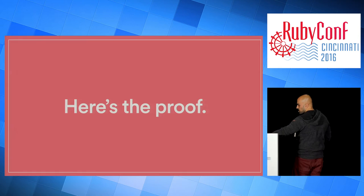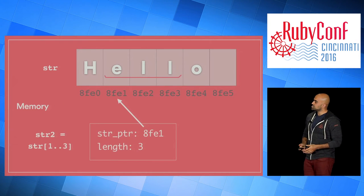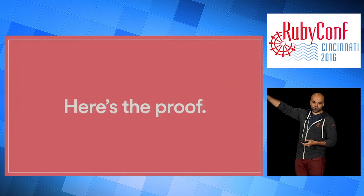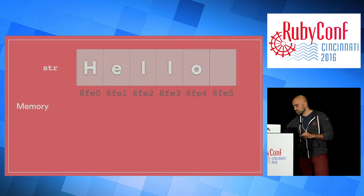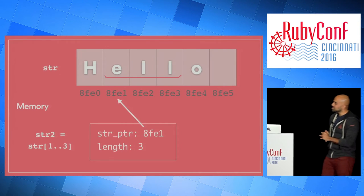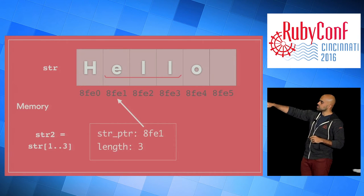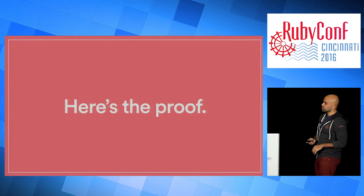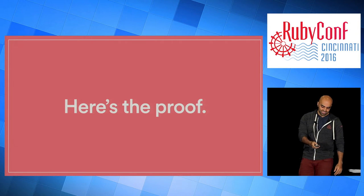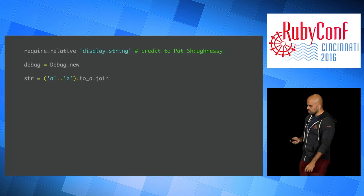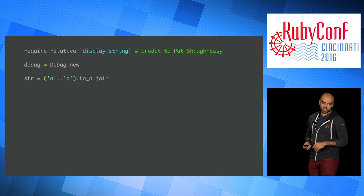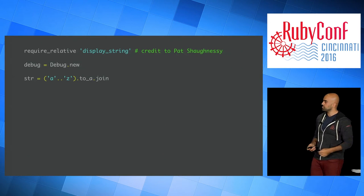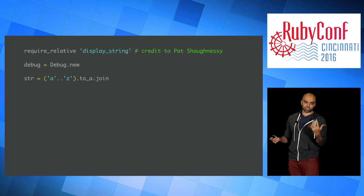Let me show you proof that Ruby is actually doing this. I'll use a library called display_string — credit to Pat Shaughnessy for writing it. It's a C binding that lets me inspect the struct that constructs the string in Ruby. I create the string that is the alphabet — A through Z joined together — and then dupe it. Dupe is just cloning, creating another copy of the exact same string, which should go to a new place in memory.